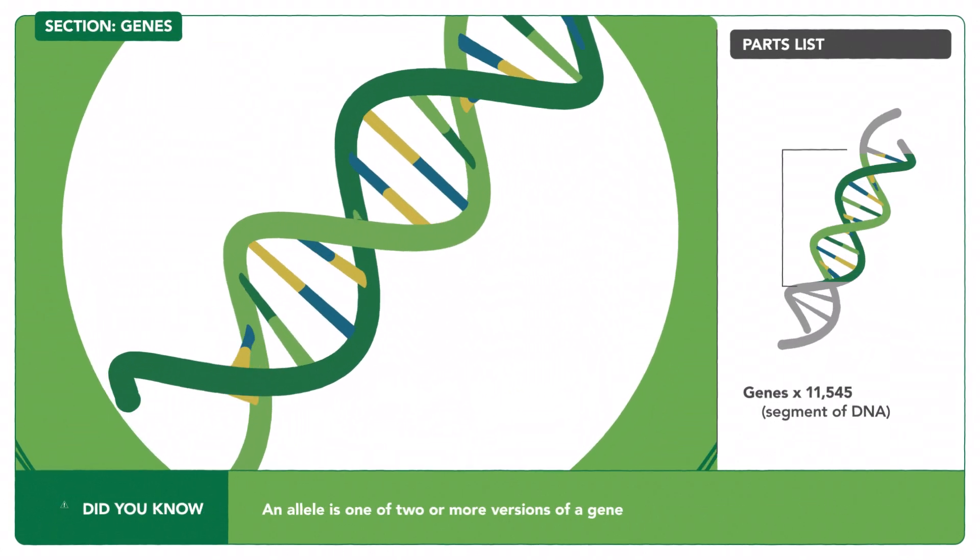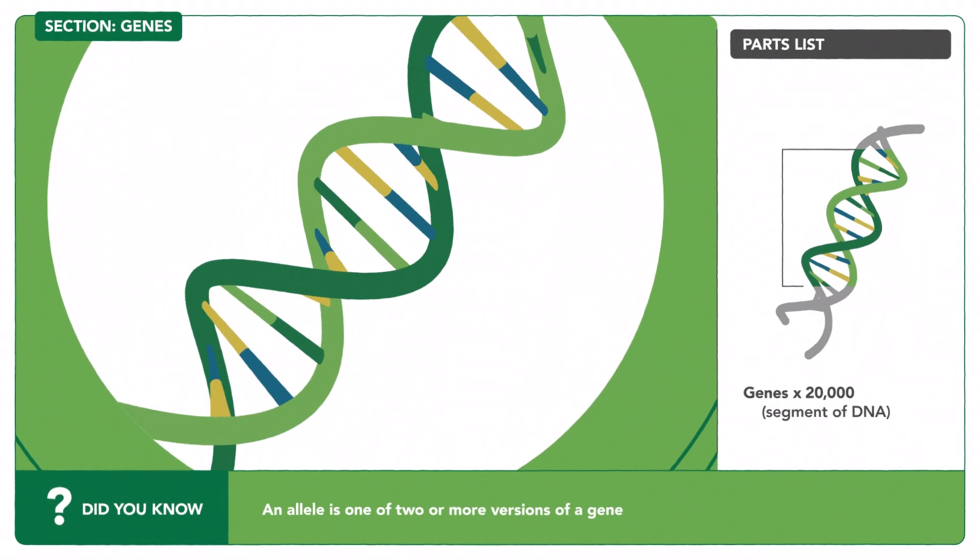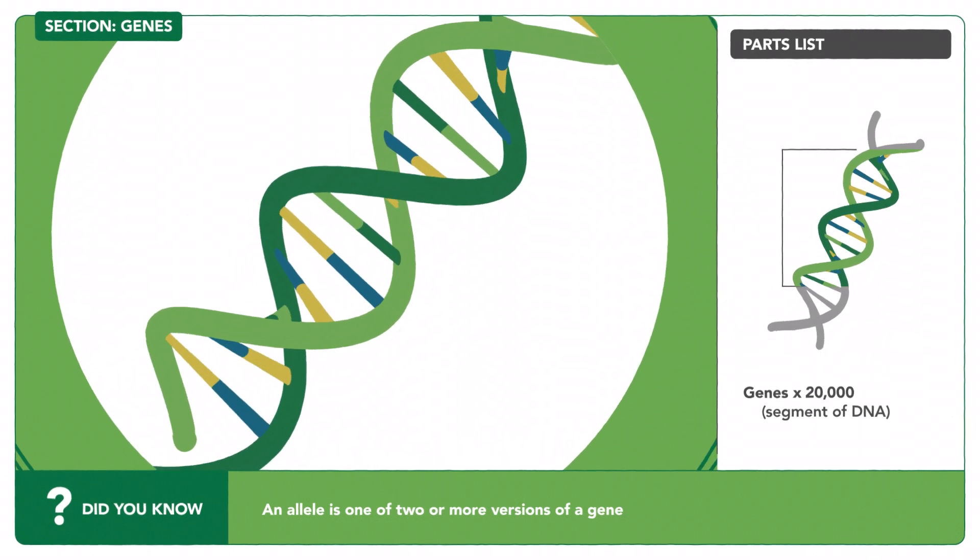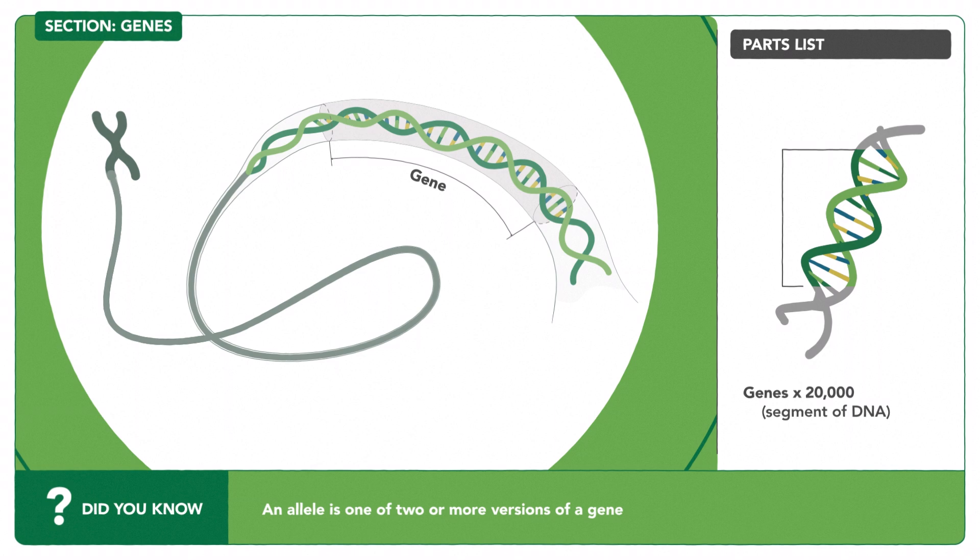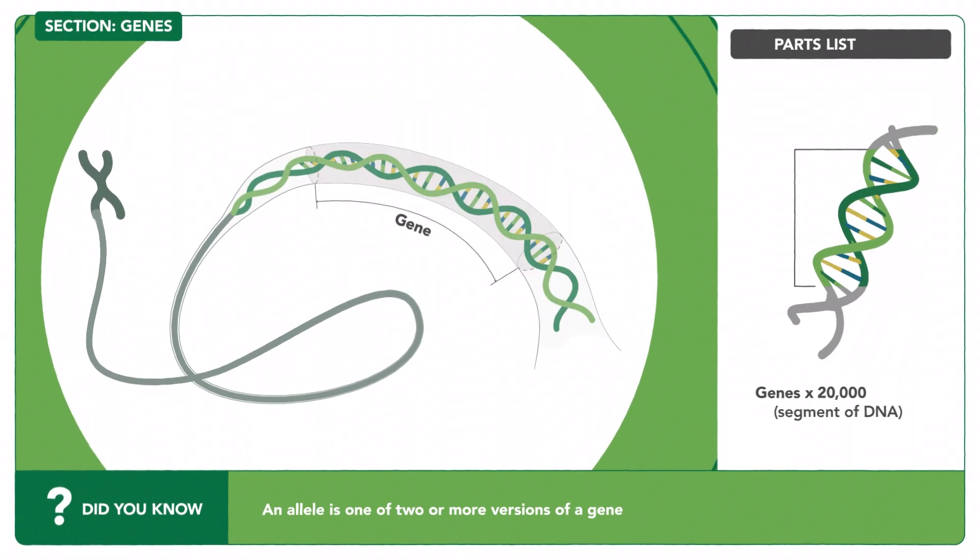Over 20,000 genes in each cell are determined by the DNA along the chromosomes. Within the genes, the order of the bases from step one creates differences that makes us each unique.